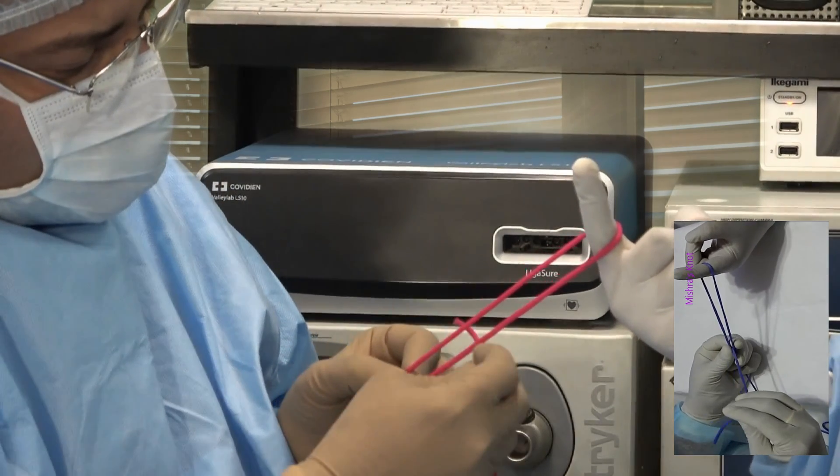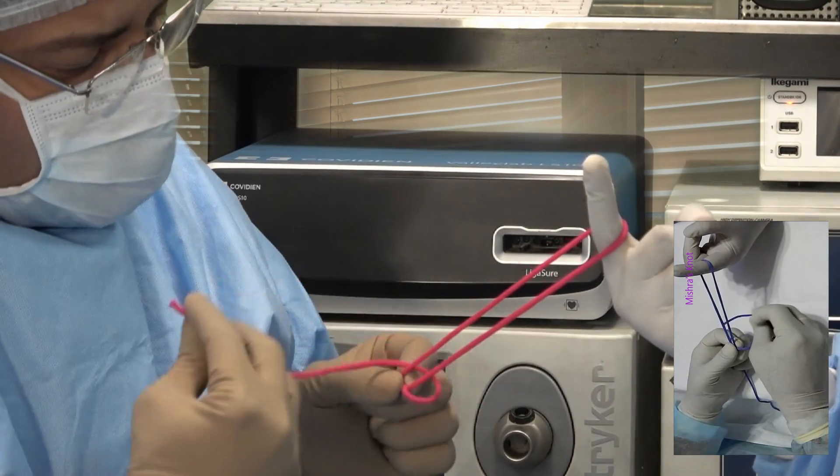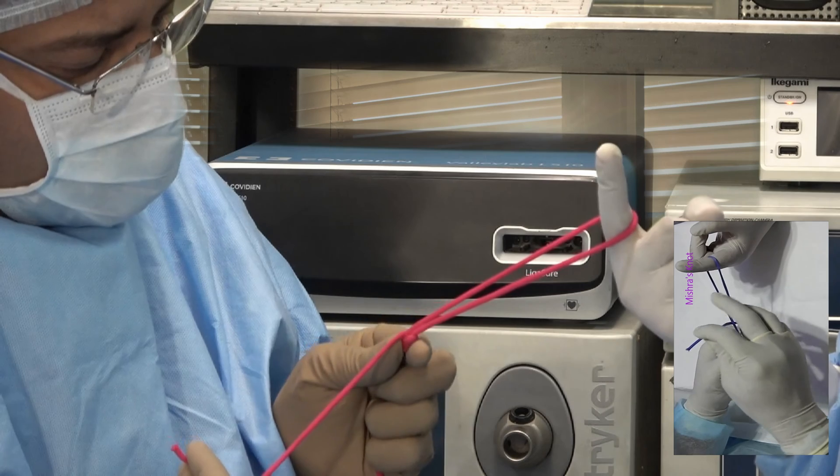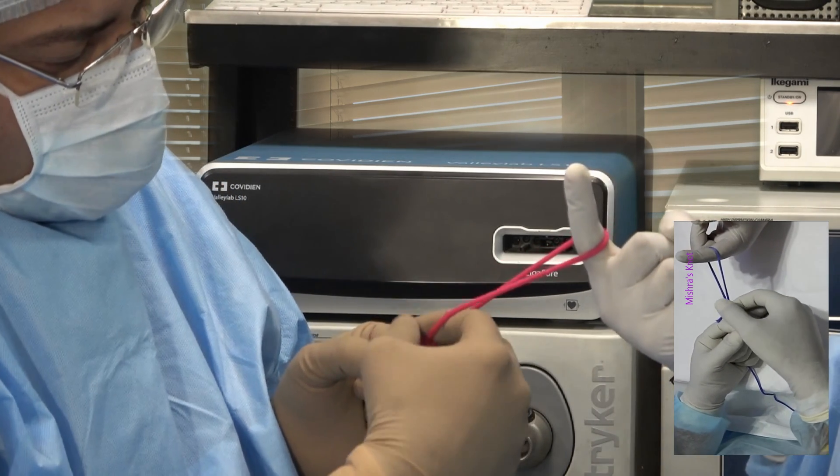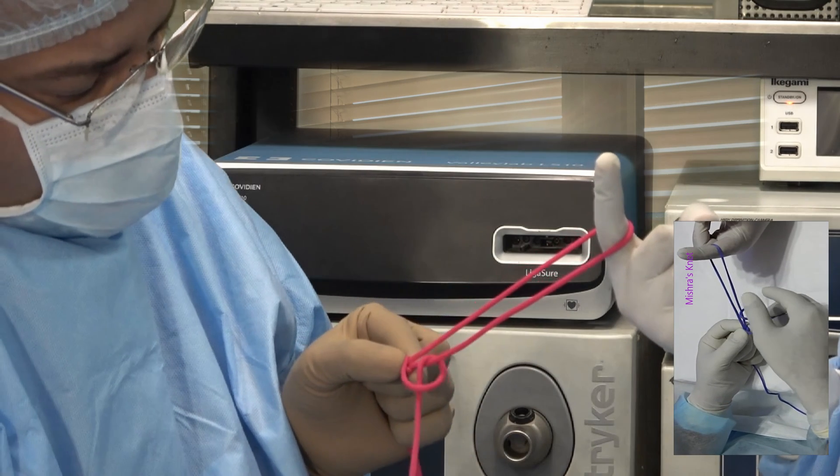And after that, you will take one wind. After taking one wind, you will lock it. You will take a half knot on the right side and this is locked.